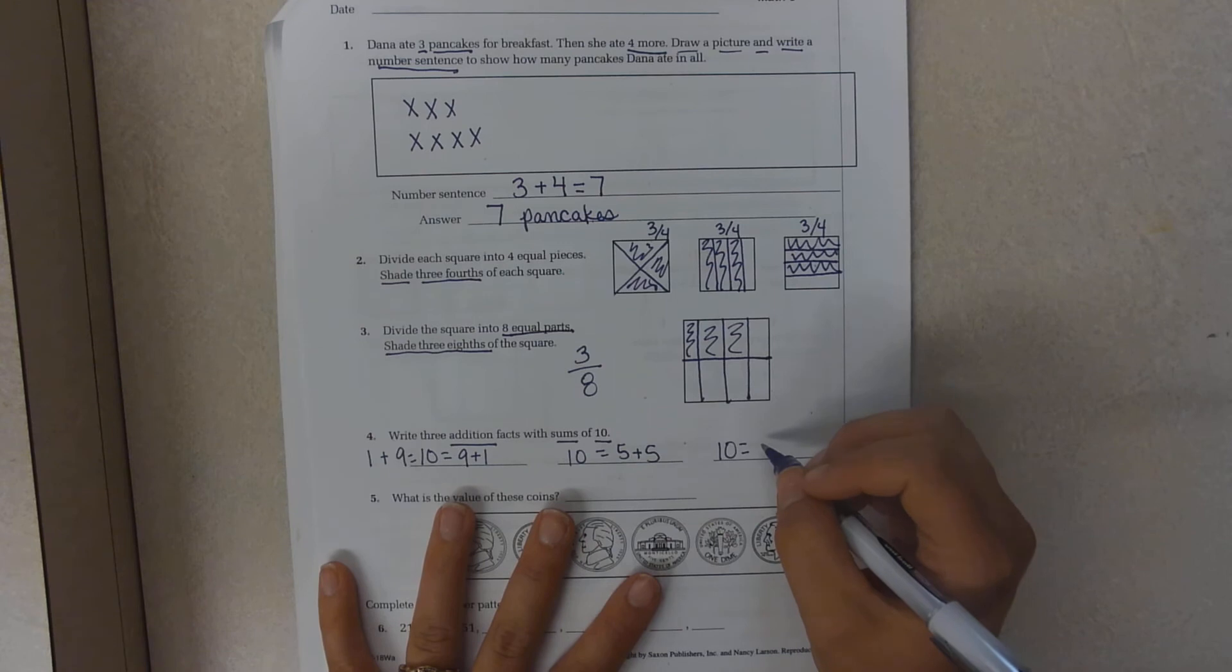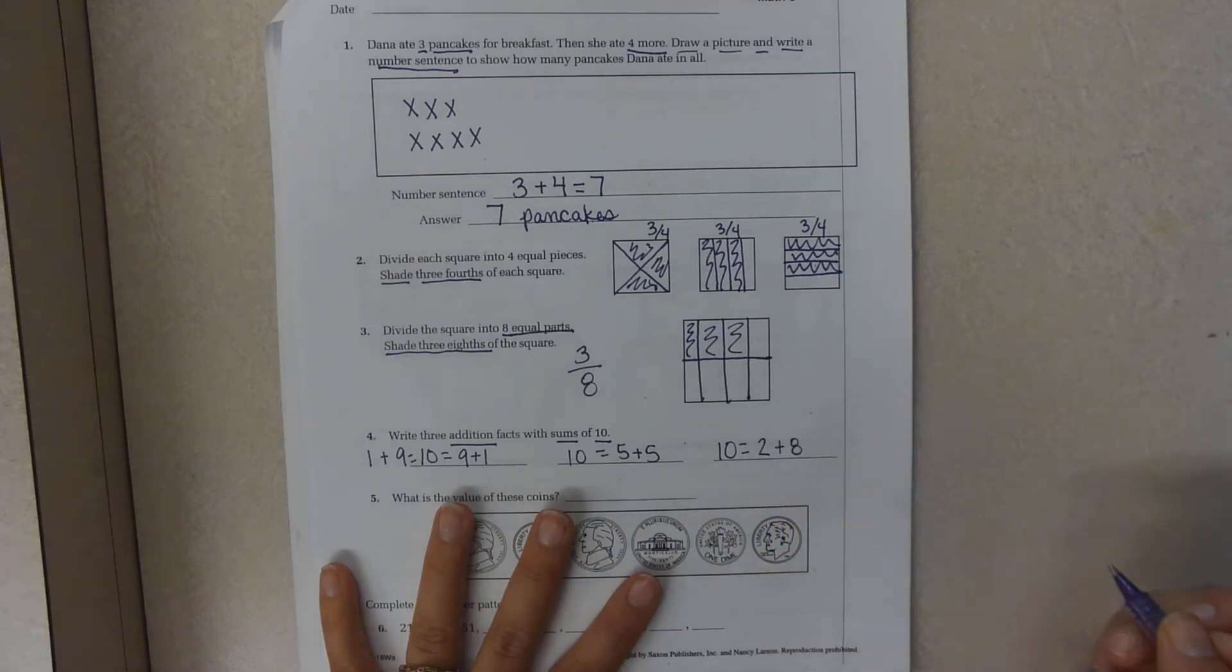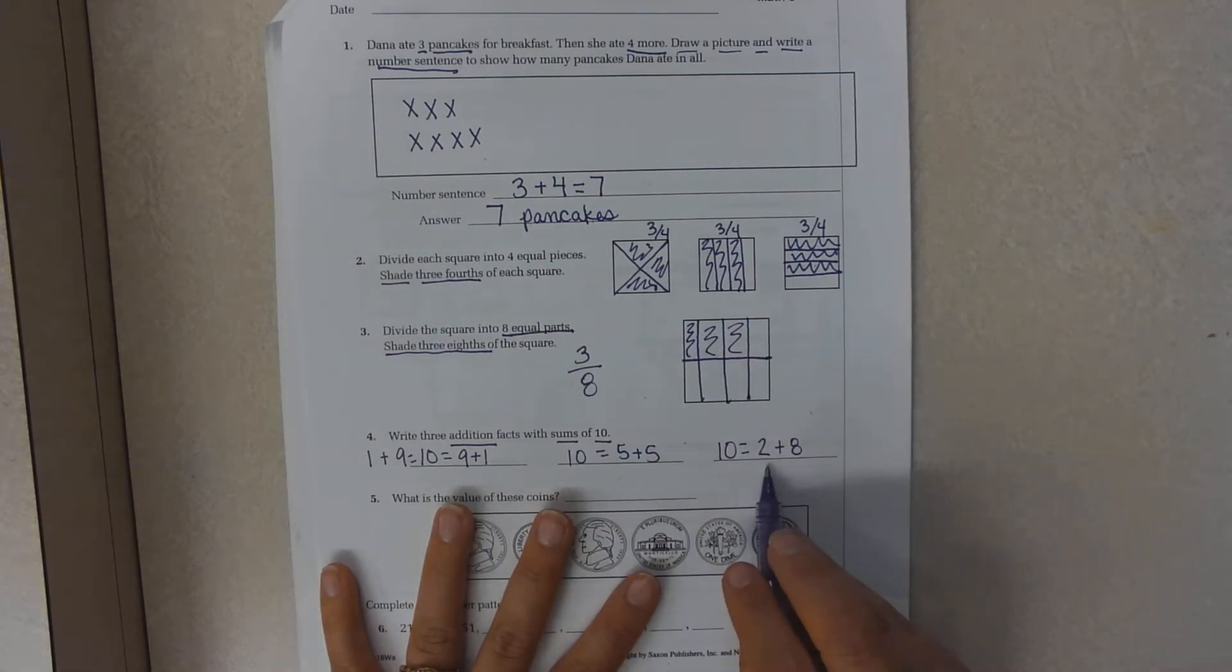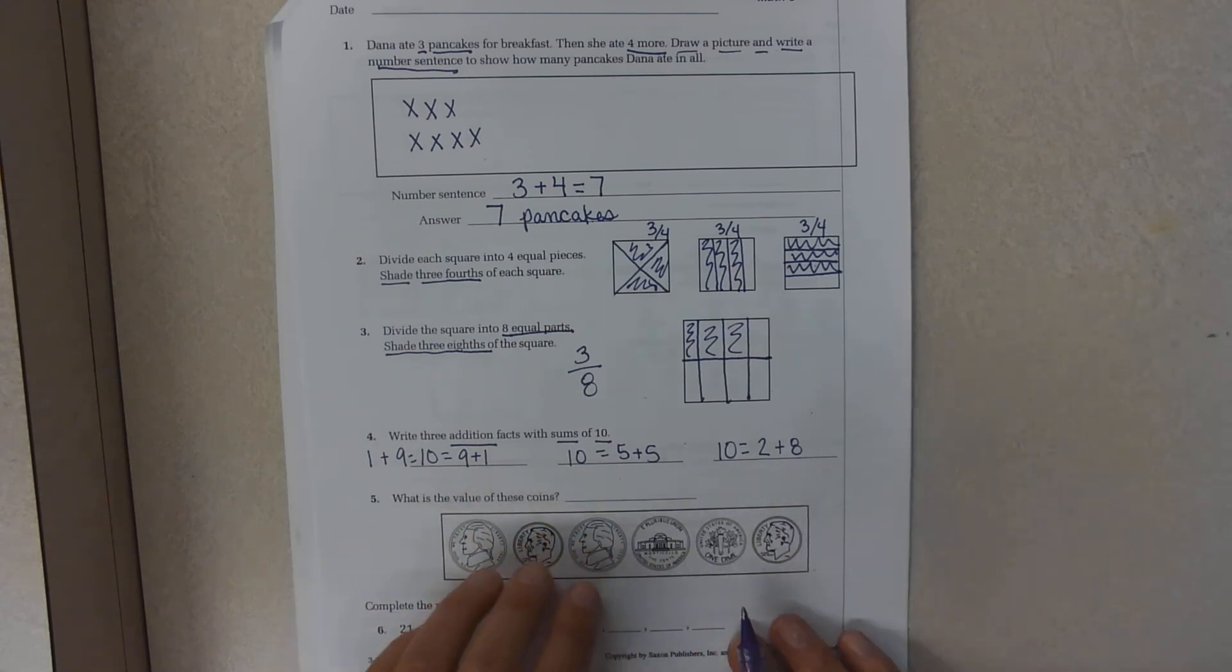I can do two plus eight or eight plus two. I can do three plus seven or seven plus two because of the commutative property.